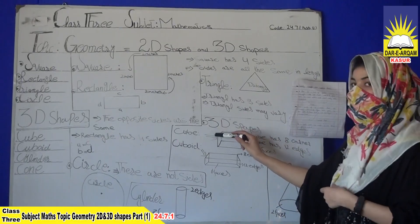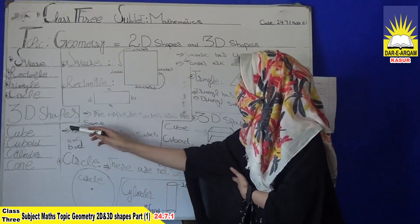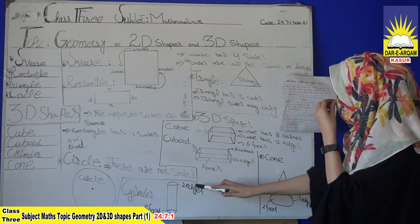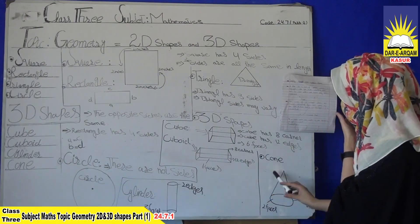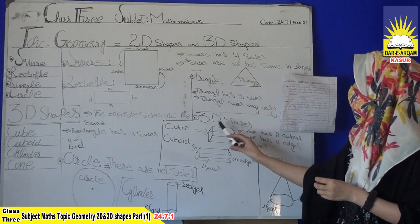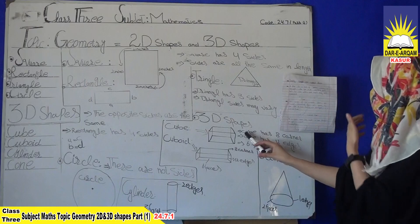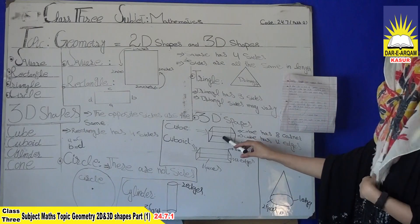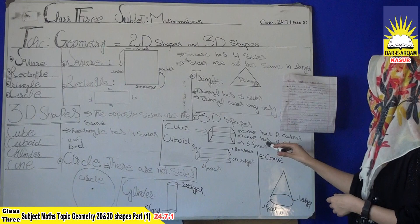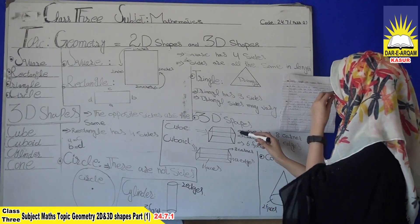Next we have 3D shapes. In 3D shapes we have cube, cuboid, cylinder, and cone — 4 shapes in total. This is the shape of a cube. Cube has 8 corners, 12 edges, and 6 faces.